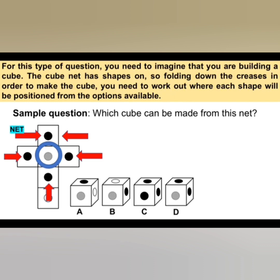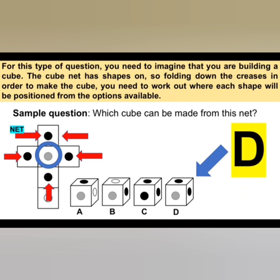I can immediately answer this question by following that process, because the only option that has the grey circle surrounded by black circles is D. So my answer would be D straight away. When tackling these kinds of questions, focus on one particular area of the net. You could also focus on the white circle and look for corresponding shapes or colors of shapes around it, and either eliminate incorrect answers or just choose the correct answer straight away.